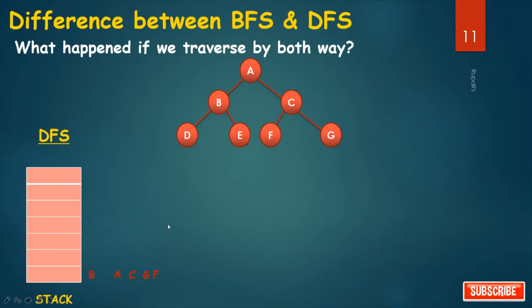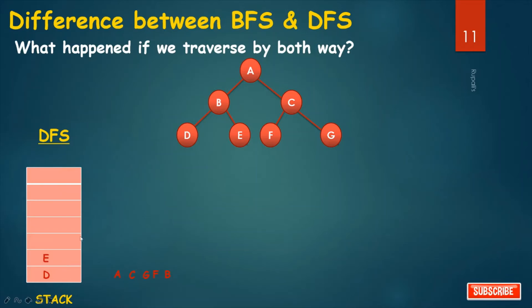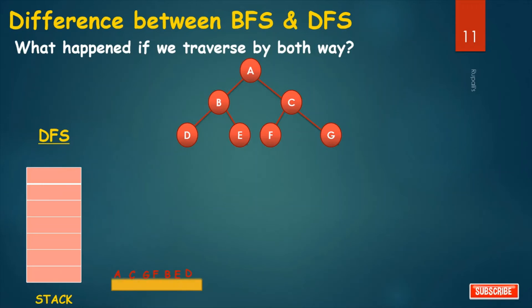Pop B and print B. Check the connected nodes: A, D, and E. A is already in status 3. Only D and E have status 1, so push D and E. Pop E and print E. Check connected nodes: only B, which is in status 3. Then pop D and print D. Check connected nodes: only B. So our DFS traversal result is: A, C, G, F, B, E, D.